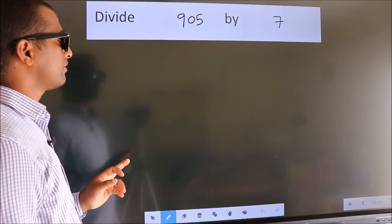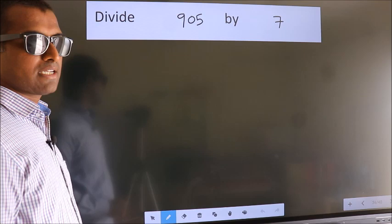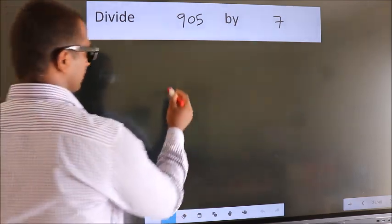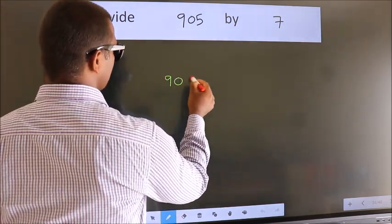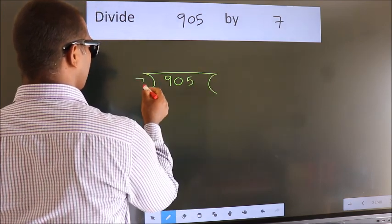Divide 905 by 7. To do this division, we should frame it in this way. 905 here, 7 here.